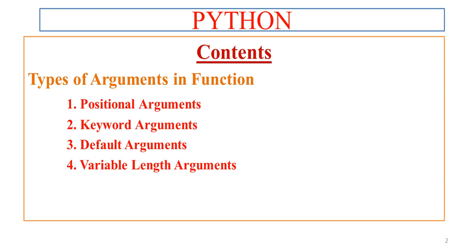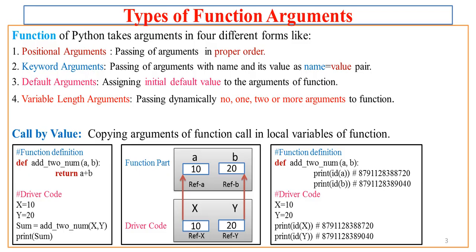We will see positional, keyword, and default at length; variable length arguments may be discussed in the next lecture. Functions in Python have arguments of four different types, meaning you can pass arguments to a function in four different ways.